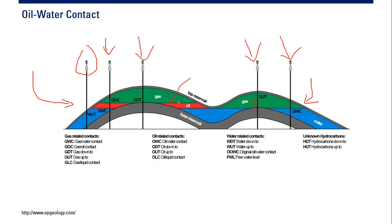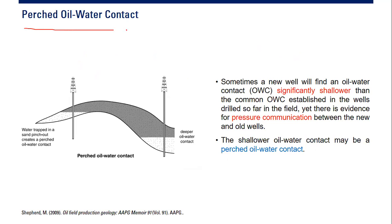In many cases, the oil-water contact across the reservoir is at a uniform level. But in some cases, we will face what is called a perch oil-water contact. One well, when penetrating the reservoir, will encounter the oil-water contact at a shallower depth, while another well will meet the oil-water contact at a deeper level.